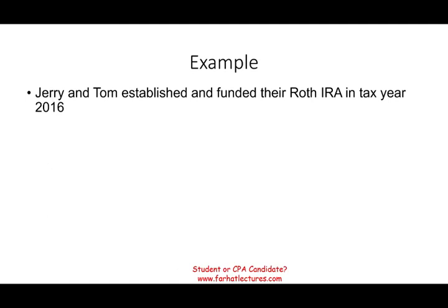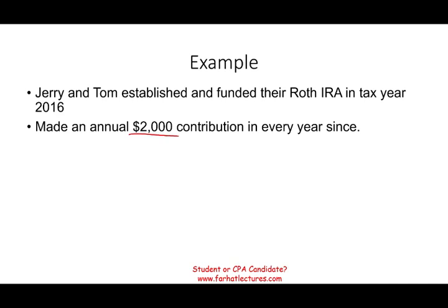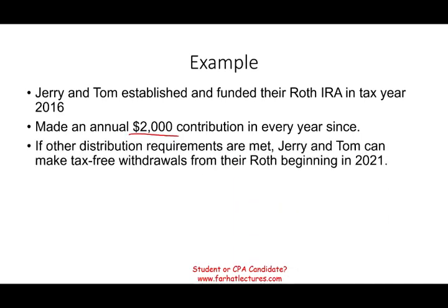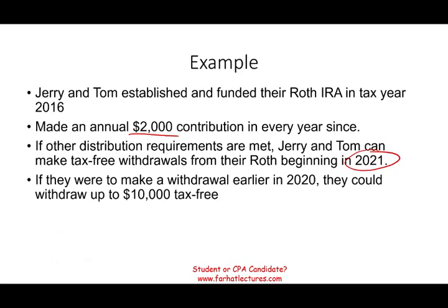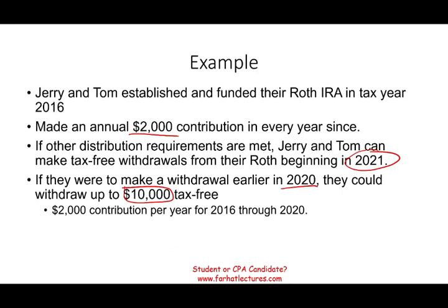Let's work a quick example. Jerry and Tom established and funded their Roth IRA in 2016 and made annual contributions of $2,000 every year since then. If other distribution requirements are met, Jerry and Tom can make tax-free withdrawals from their IRA starting 2021. Let's assume they made a withdrawal in 2020 — before they met the requirement. They contributed $2,000 per year for 2016, 2017, 2018, 2019, and 2020 — assuming they made their contribution in 2020 — giving them a principal or basis of $10,000.